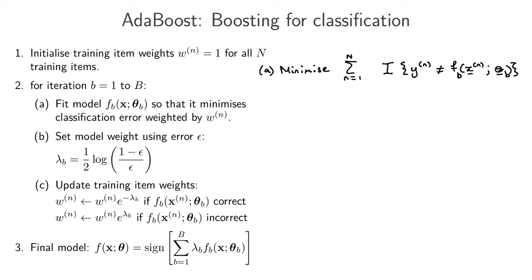This objective is just what we've always been trying to do when training any classification model — you always want to make as few mistakes as possible. For a decision tree or logistic regression, you know how to train a model to minimize the number of mistakes. The one difference here is that we weigh the classification error rate by WN, which tells us how important this specific training item is — how important it is that we don't make a mistake on it. If we do make a mistake we add WN; if we don't, we add zero.